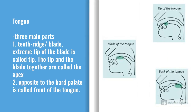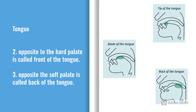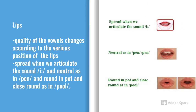The tongue is an important speech organ. It can be divided into three main parts. The part of the tongue that lies opposite the teeth ridge is called the blade; the extreme tip of the blade is called the tip, and together they are called the apex. The part opposite the hard palate is called the front of the tongue, and the part opposite the soft palate is called the back of the tongue.